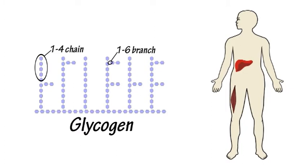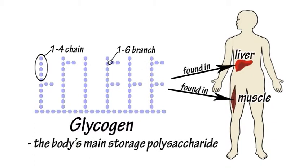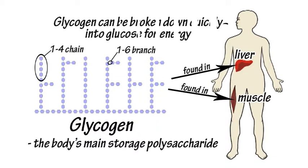Glycogen is poly-1,4 glucose with some 1,6 branches. It is the main storage polysaccharide found in the liver and muscles. Because it is highly branched, it can be broken down quickly again by the body into glucose for energy.